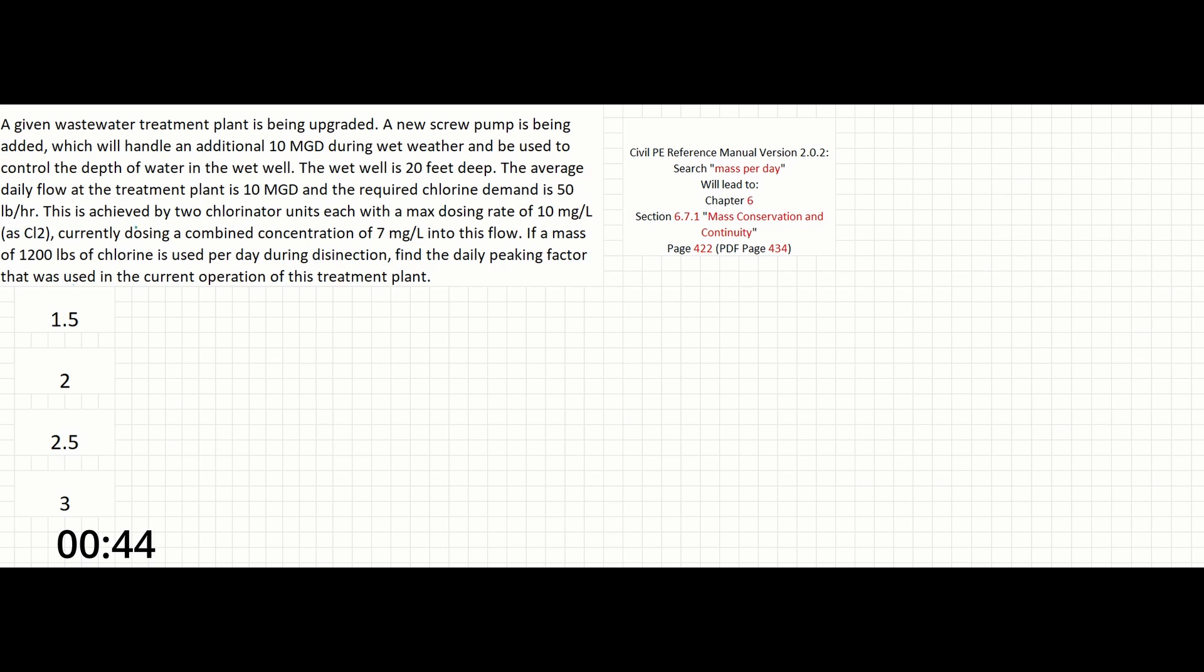Currently dosing a combined concentration of 7 milligrams per liter into this flow, if a mass of 1,200 pounds of chlorine is used per day during disinfection, find the daily peaking factor that was used in the current operation of this treatment plant.